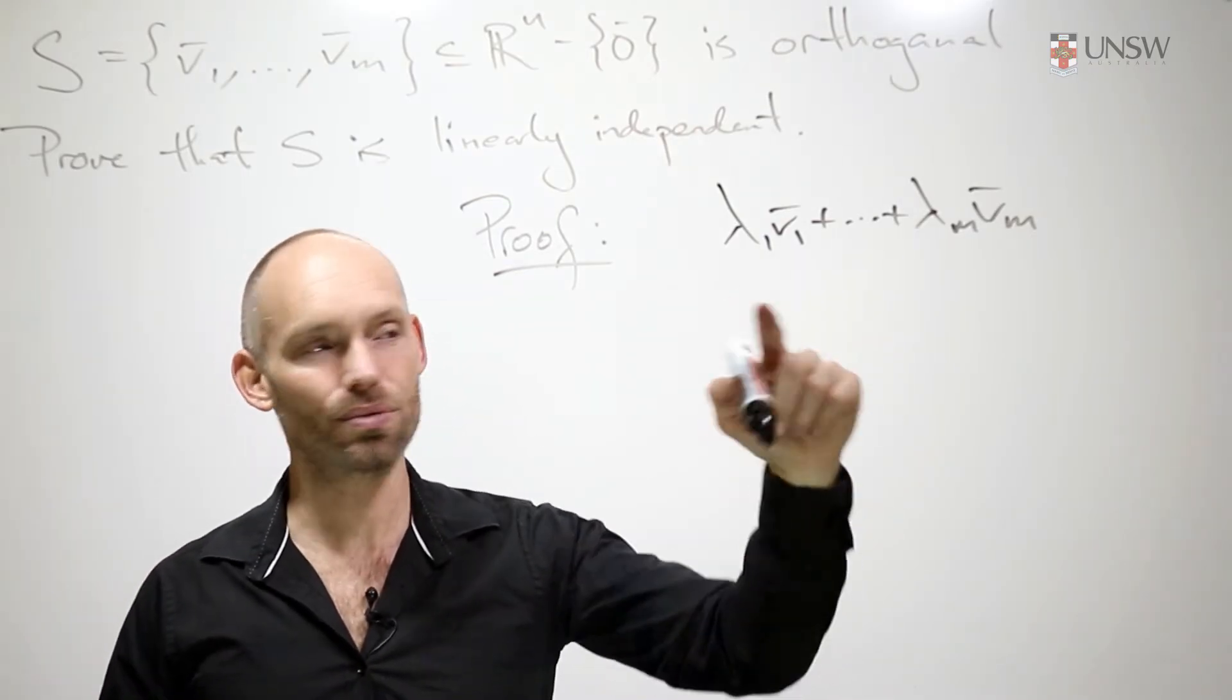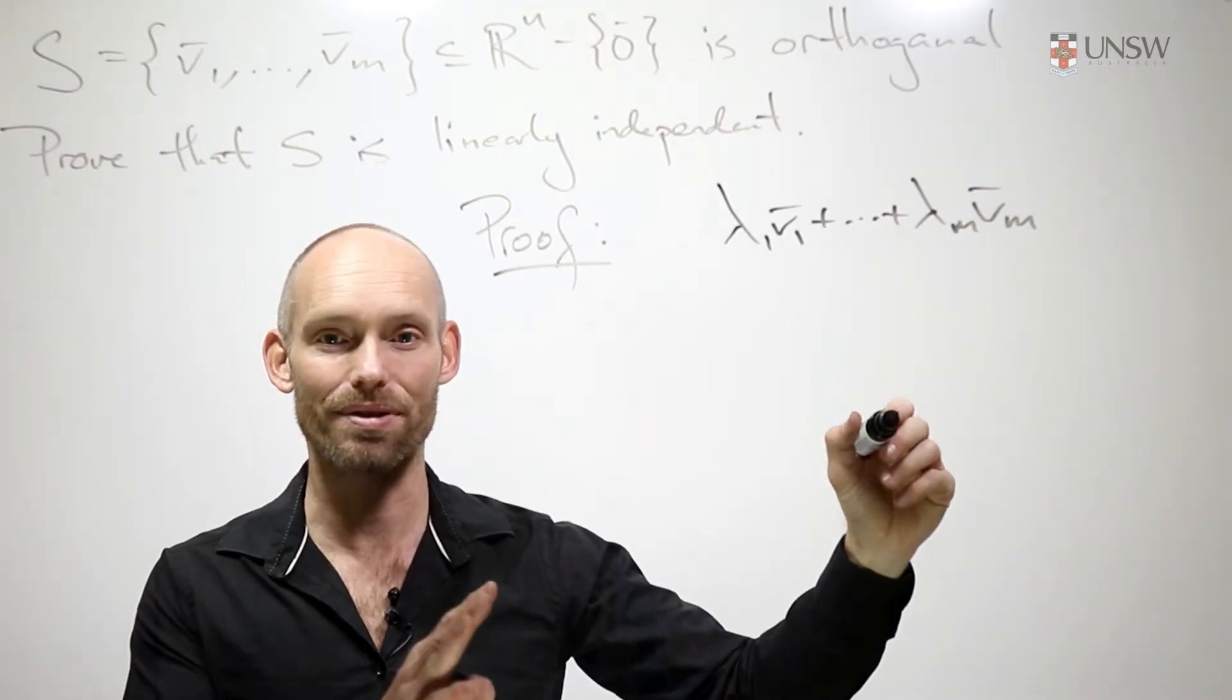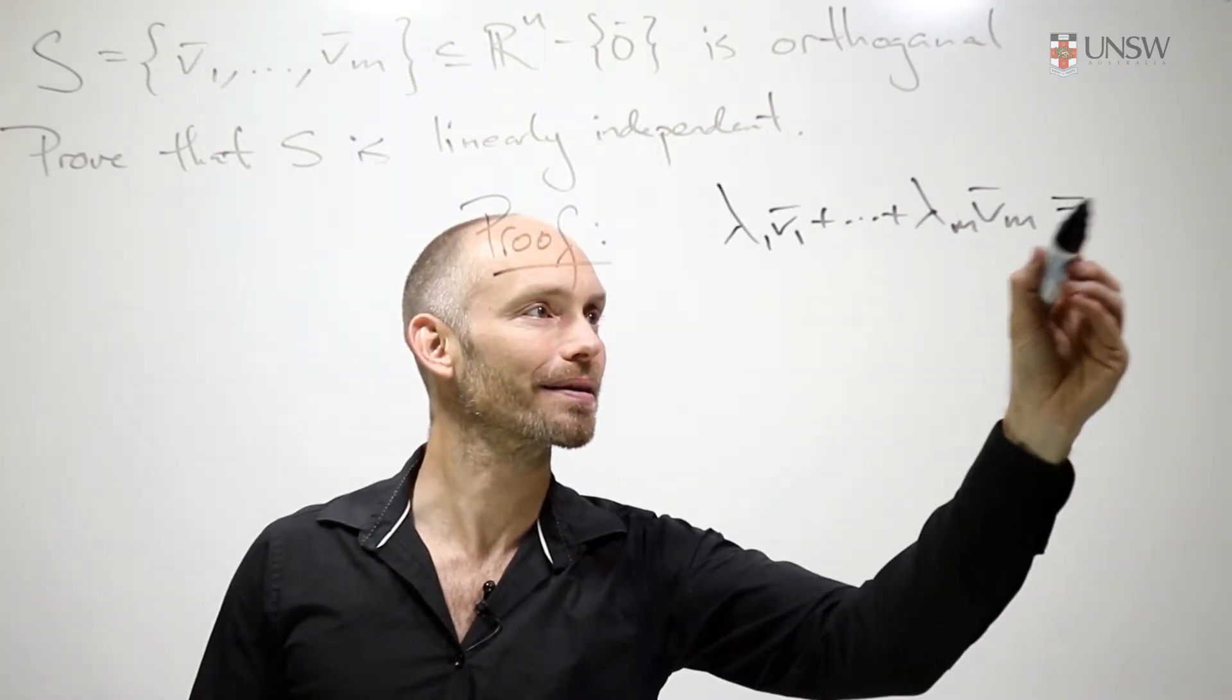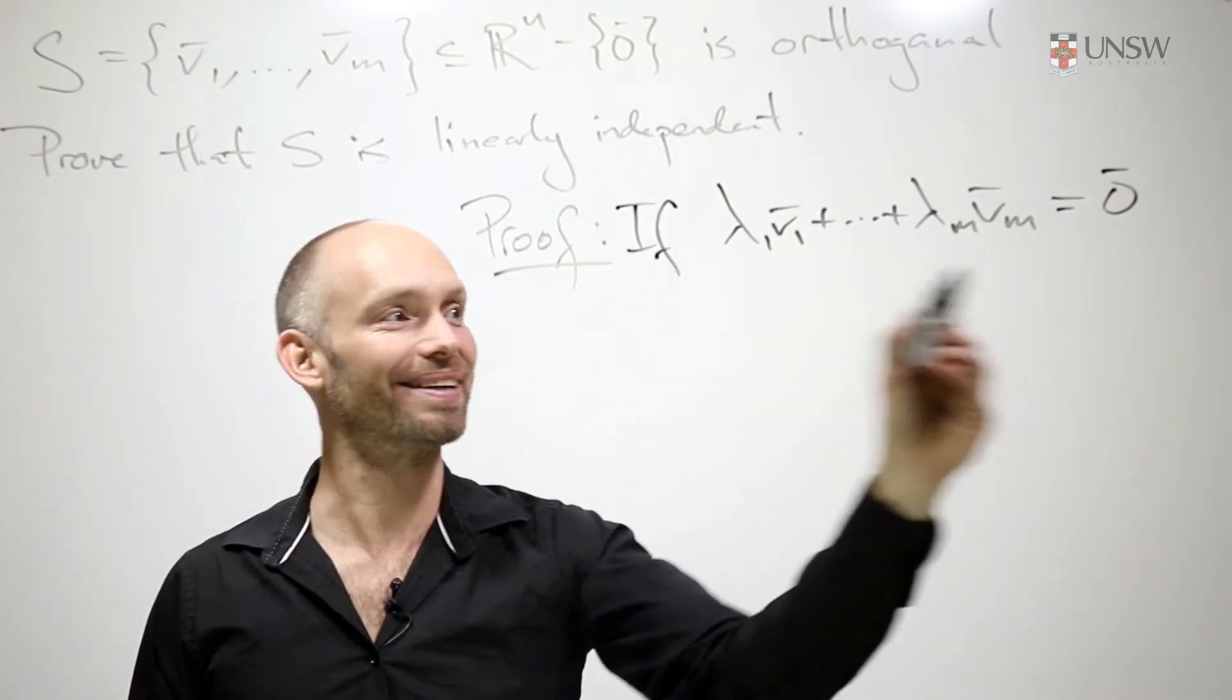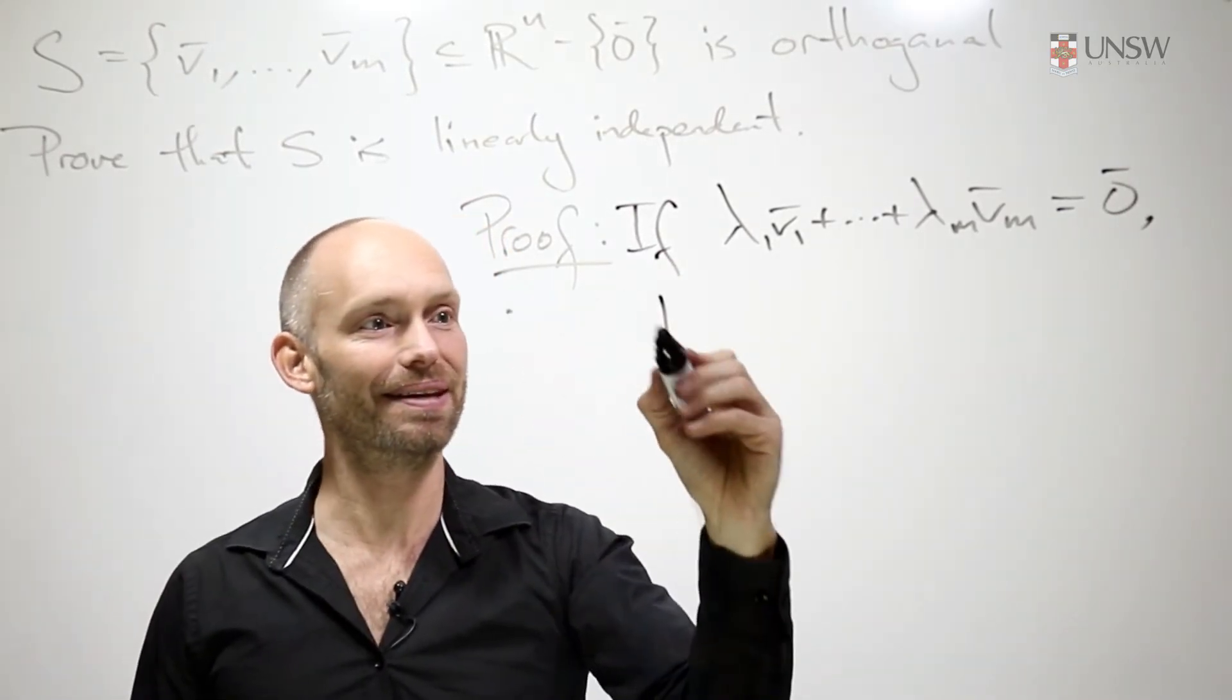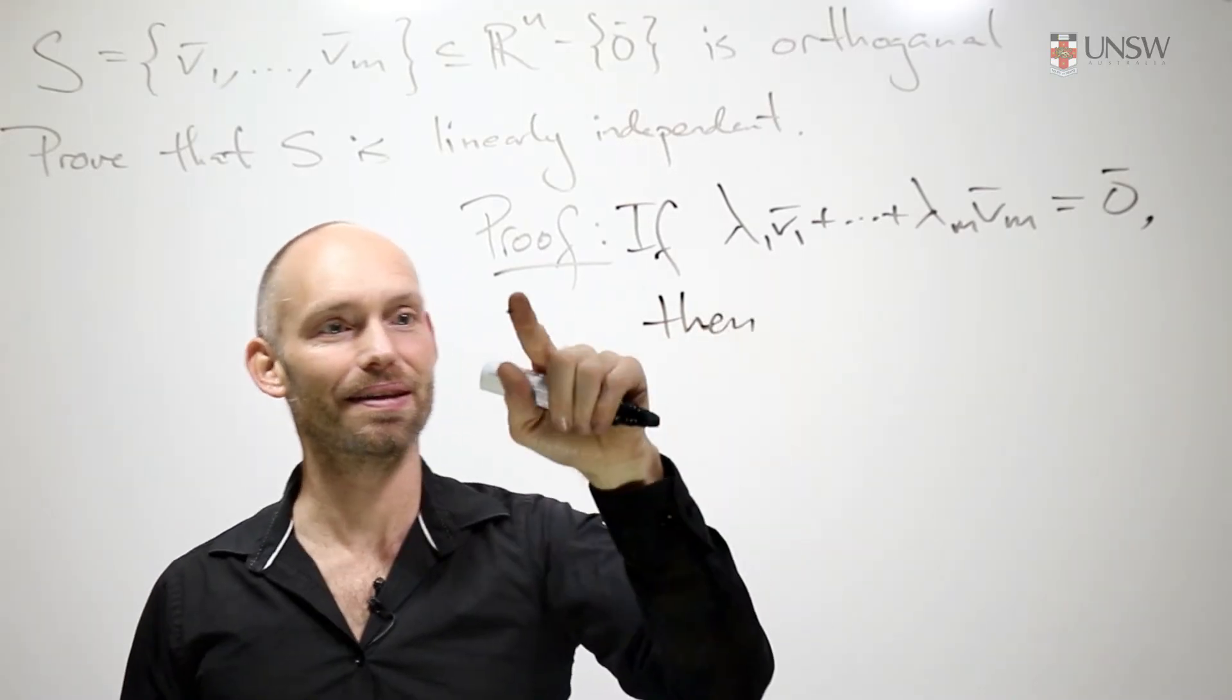Now, what we're going to do with this linear combination is suppose that it's equal to the zero vector. So let's say if, then something happens.